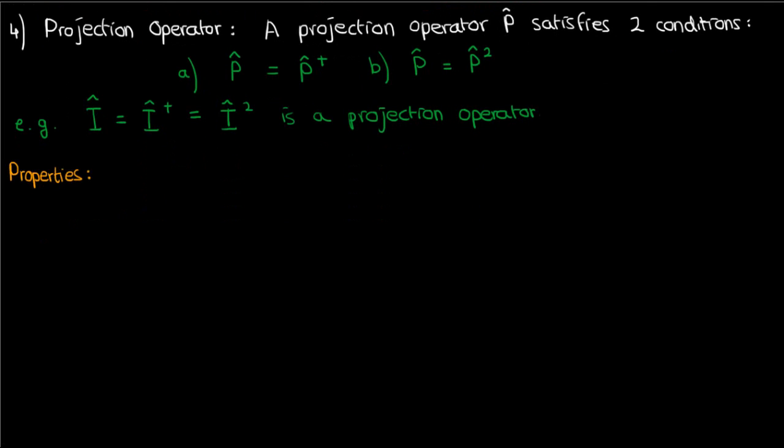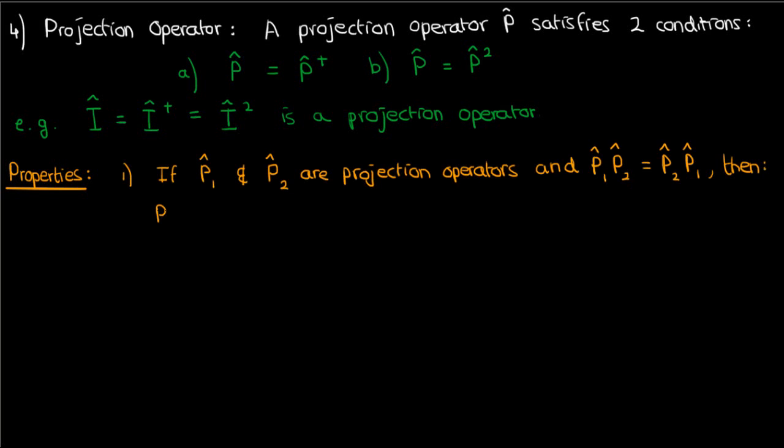Now, like all the other operators discussed earlier, the projection operator also has a bunch of properties, which I won't prove in this video. The first property is that if two projection operators commute, meaning that their products are commutative, then their product is also a projection operator.